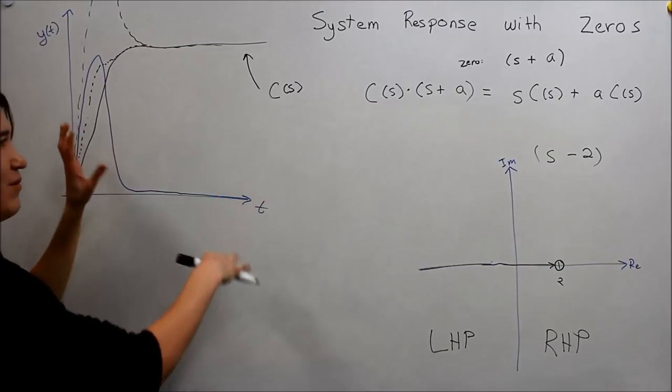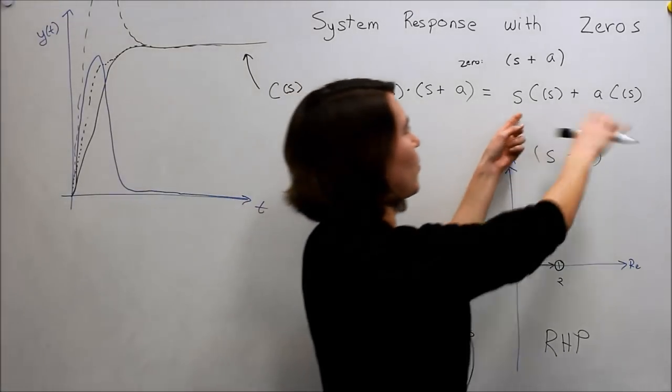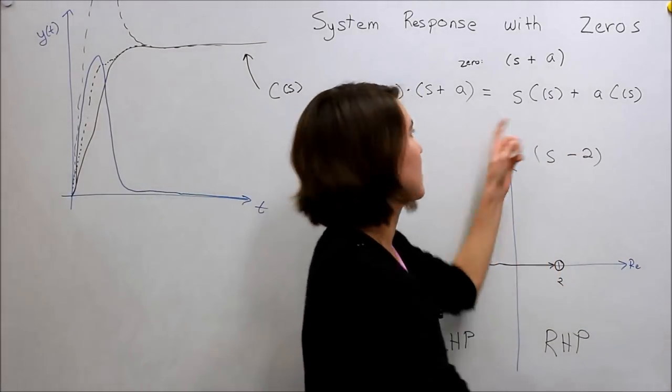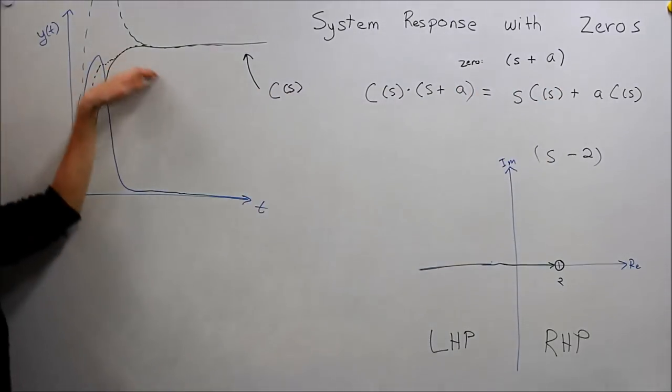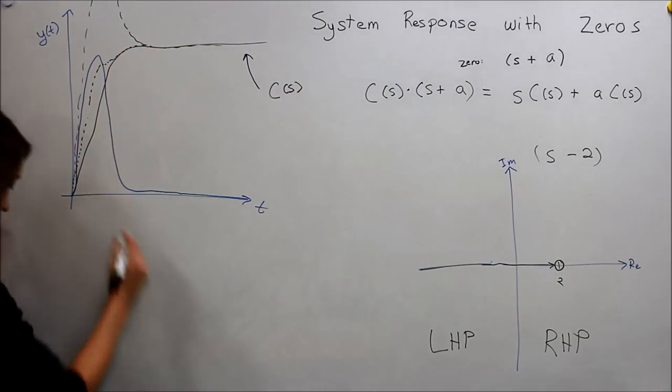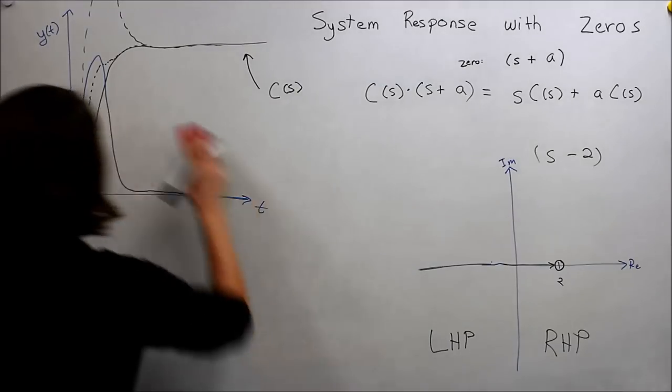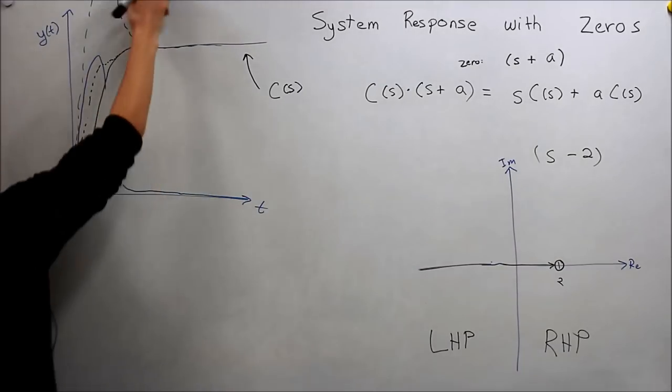And don't worry about the signs here. They're a little bit flipped. But the important thing is that they're in opposite directions. So now the derivative actually takes away from the normal response. So it's in the opposite direction.